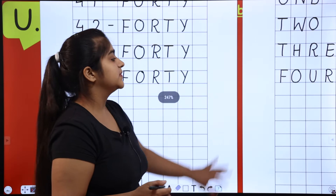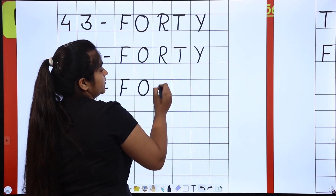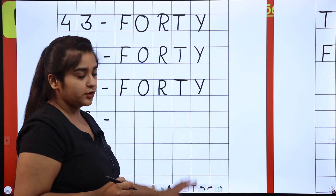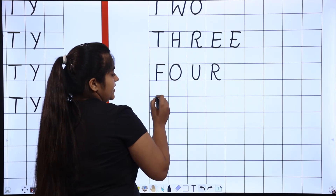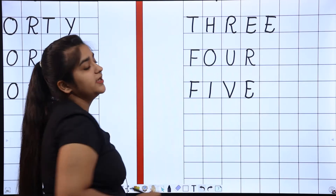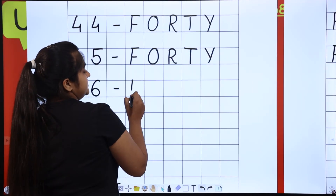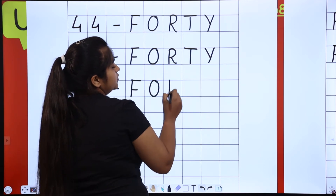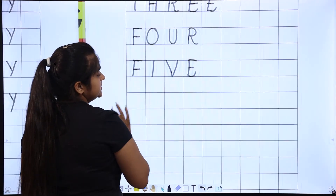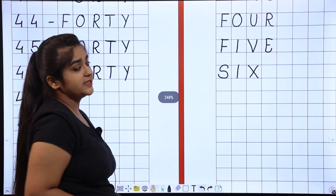45. The next spelling is of 46: F-O-R-T-Y-S-I-X. So 46 is FORTY-SIX.